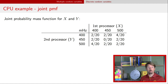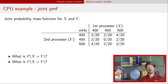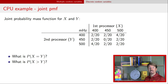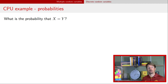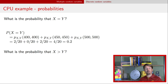Using this joint probability mass function, we can answer a number of probability questions. For example, what's the probability that x equals y? We go back to the table and find each cell where x equals y, which is exactly the diagonal. We add up those diagonal probabilities: 400-400 gives 2/20, 450-450 gives 0/20, and 500-500 gives 2/20. Adding those up gives 4 out of 20, or 0.2.